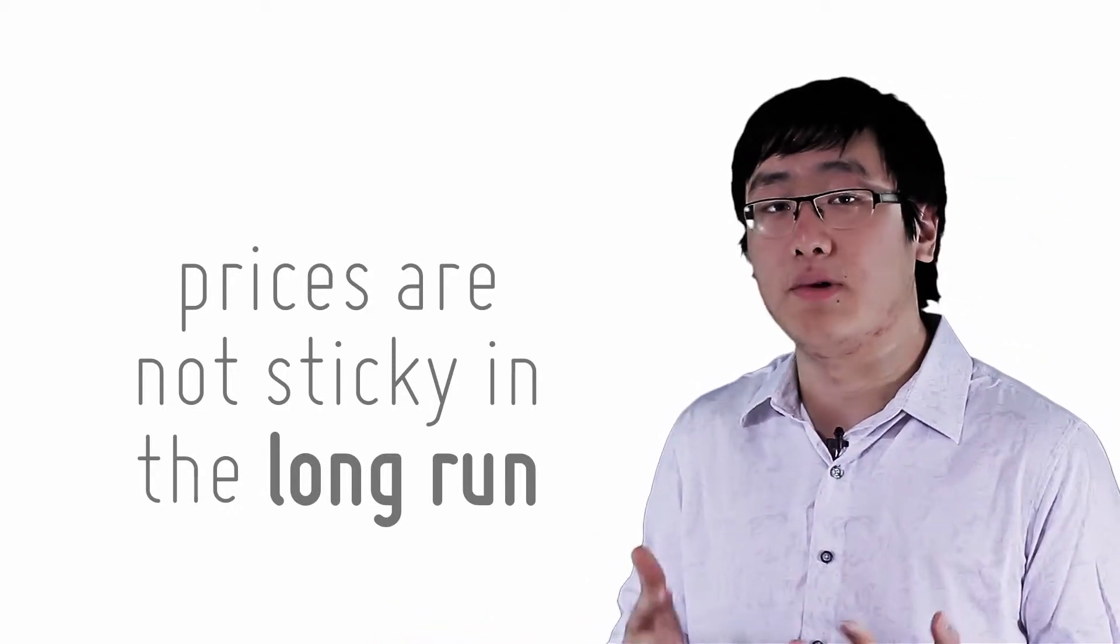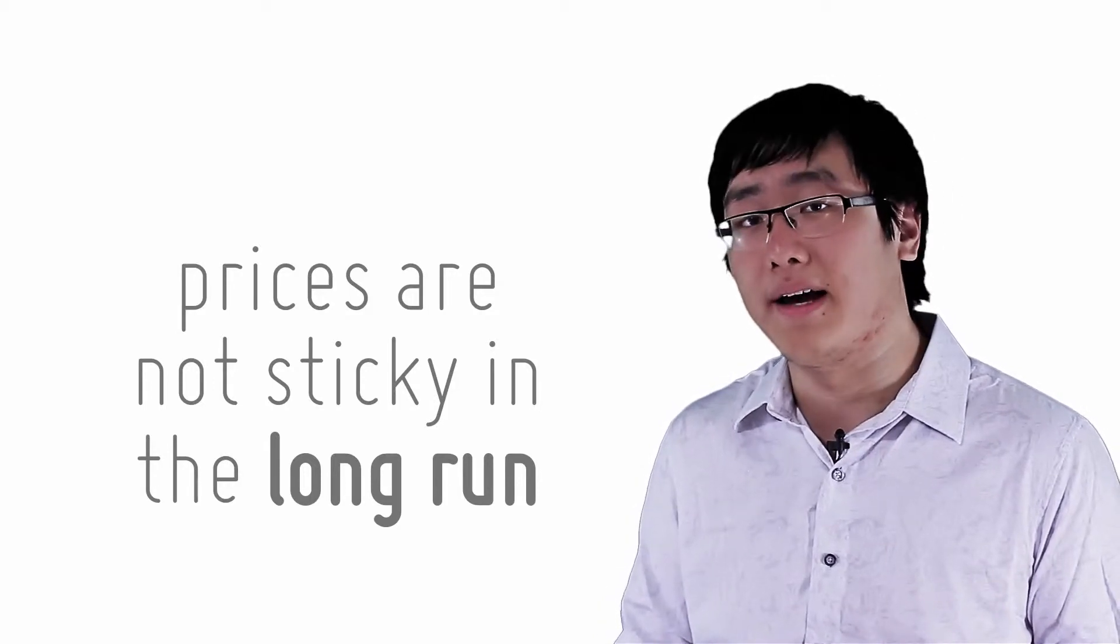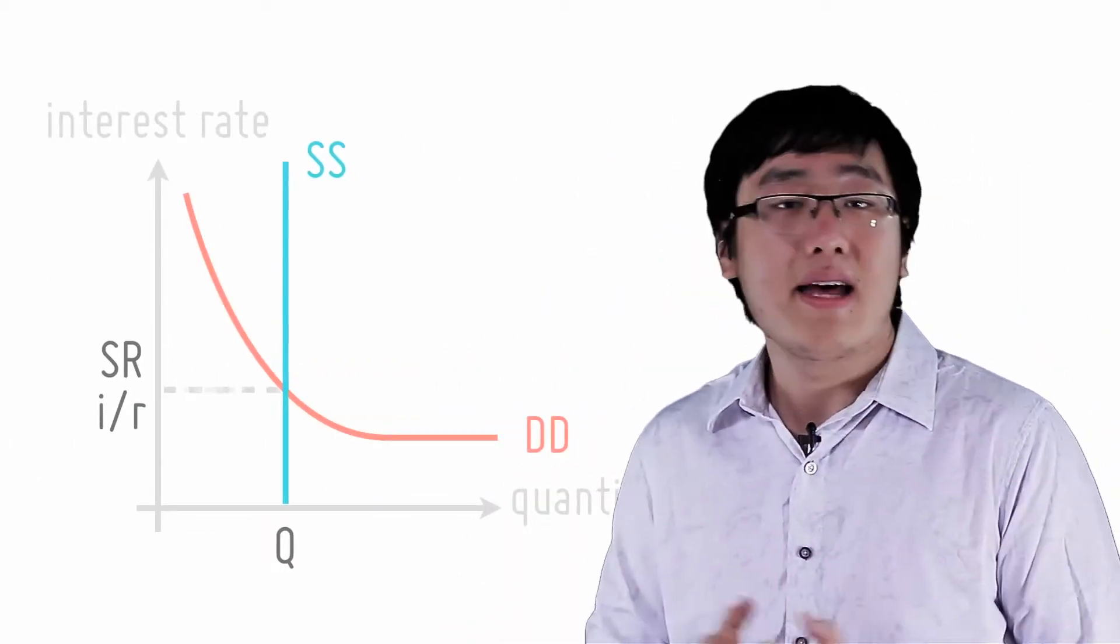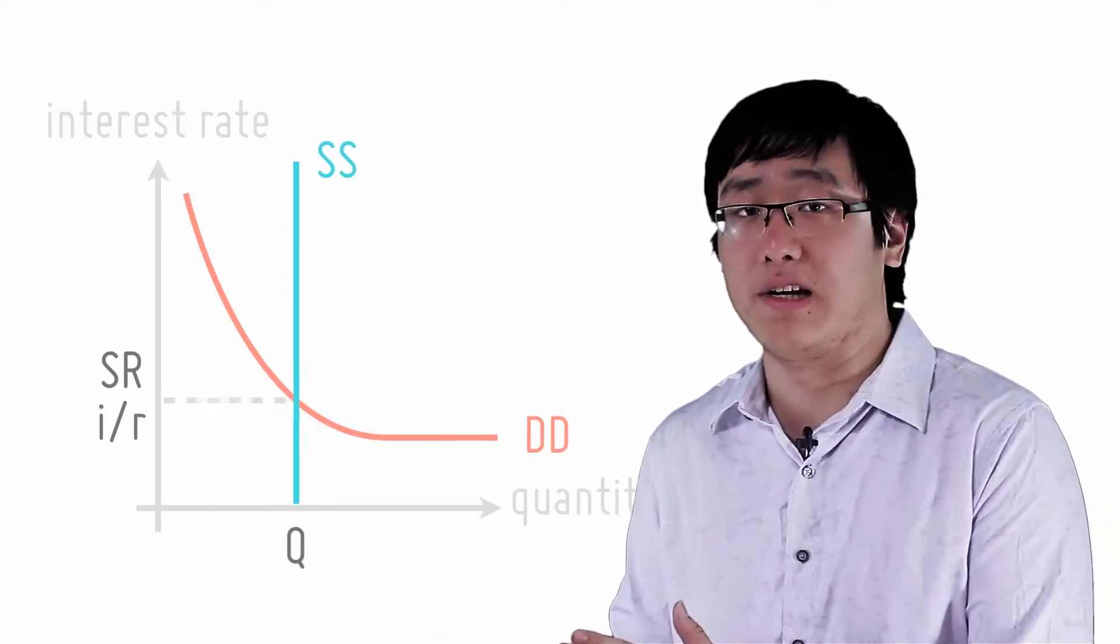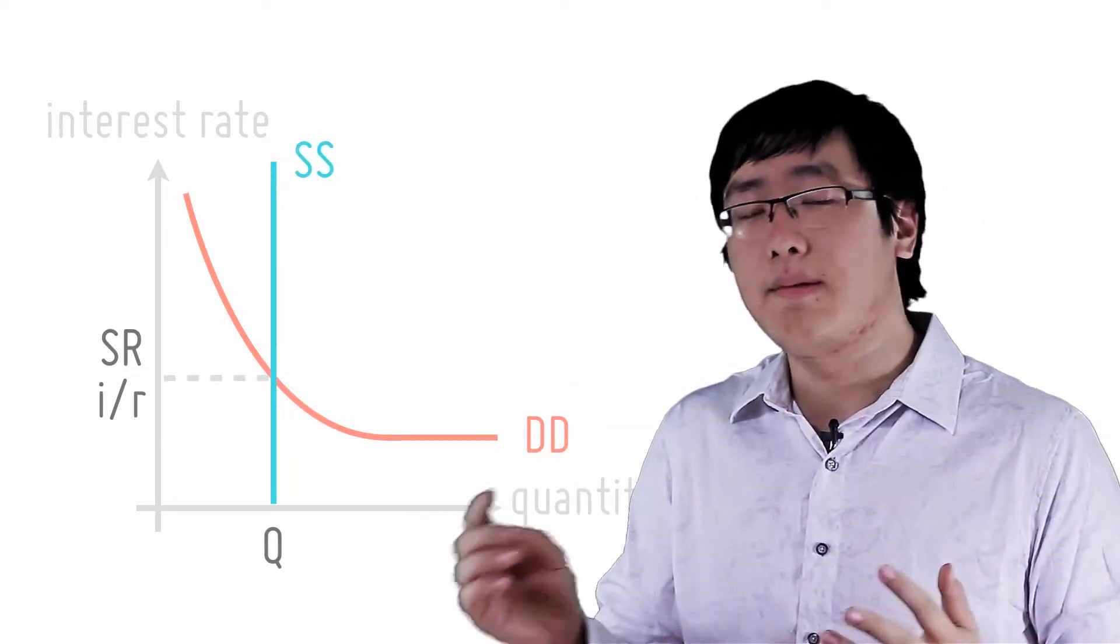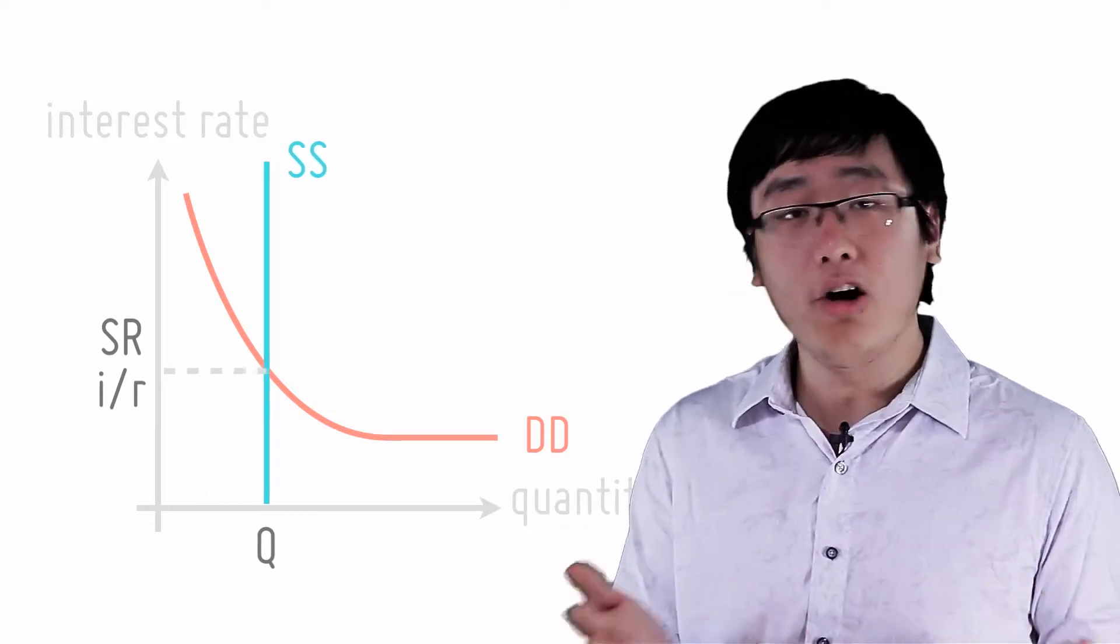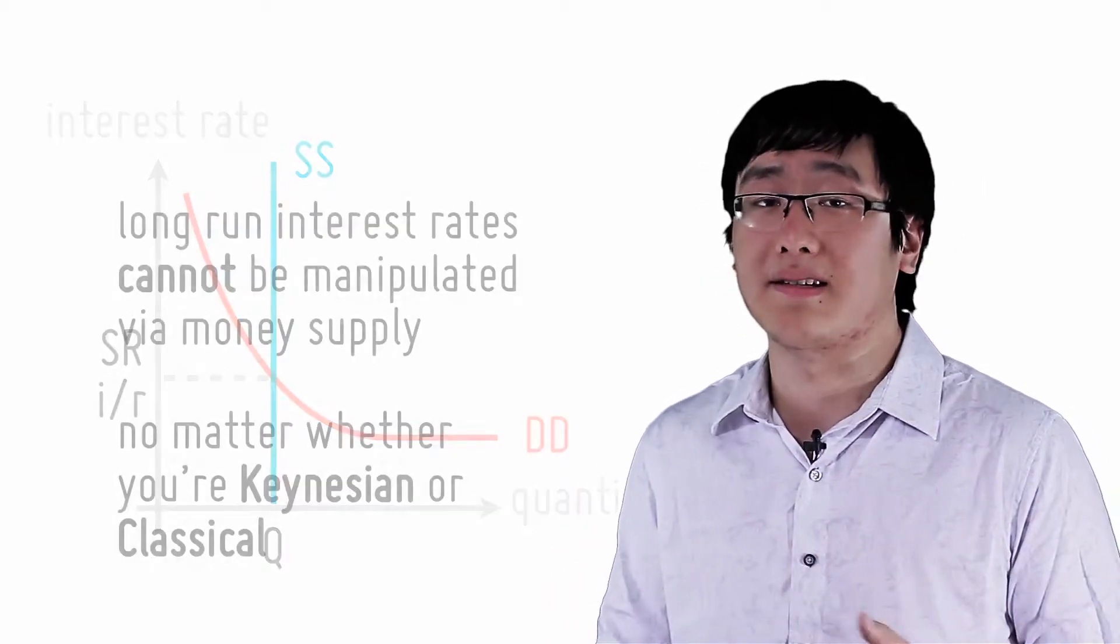Hence, in the long run, prices will adjust to reflect the changes in money supply. In other words, in the long run, if there is a money supply increase, then inflation happens and causes interest rates to return back to normal. The same happens for a decrease in money supply. In the long run, Keynesians believe in the same thing as classical economists.